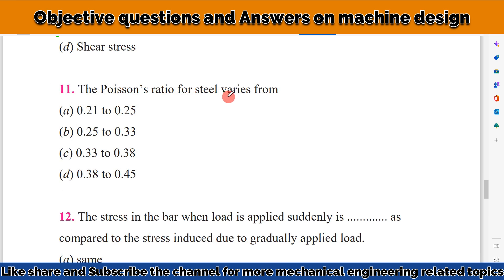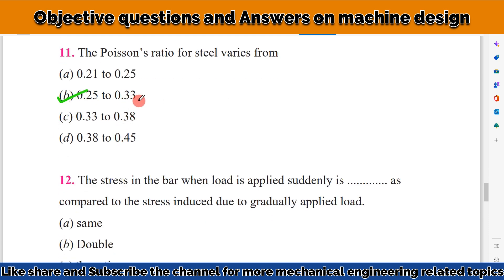The Poisson's ratio for steel varies from 0.25 to 0.33.